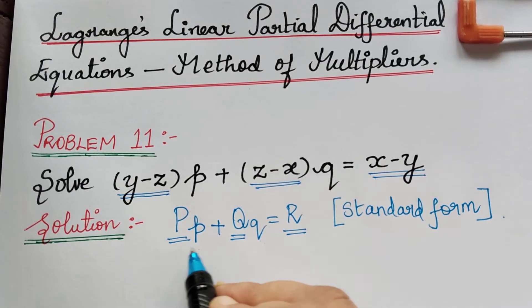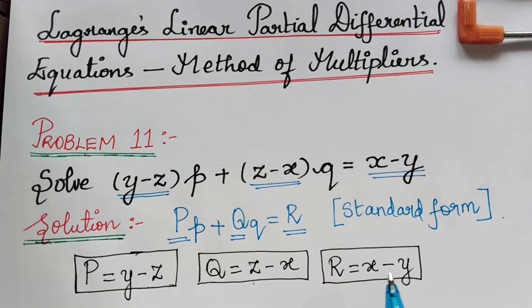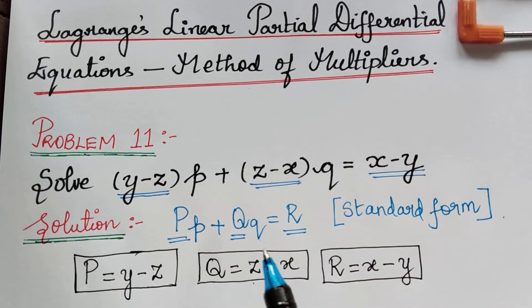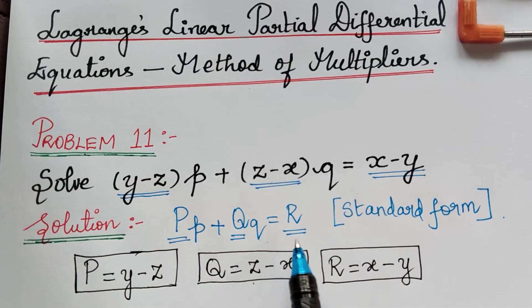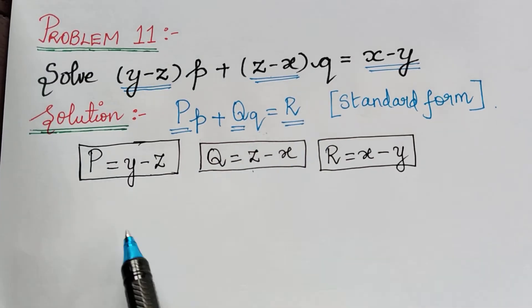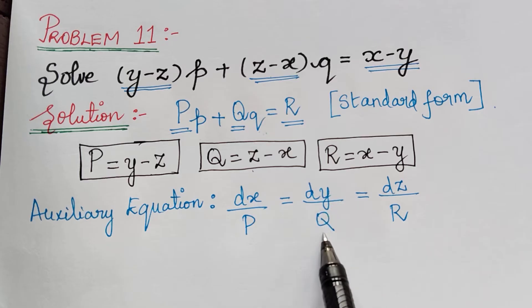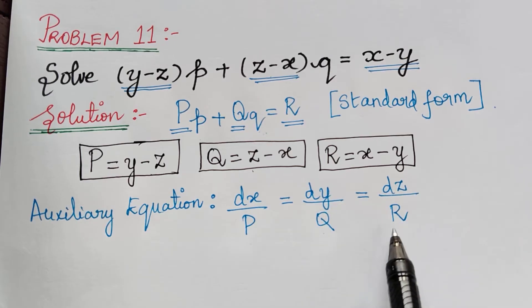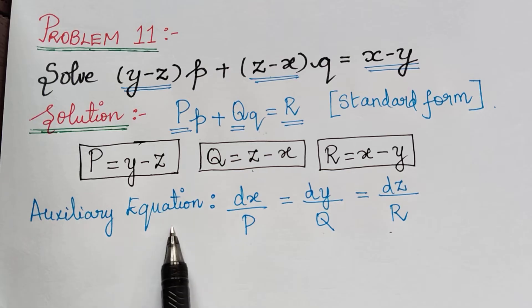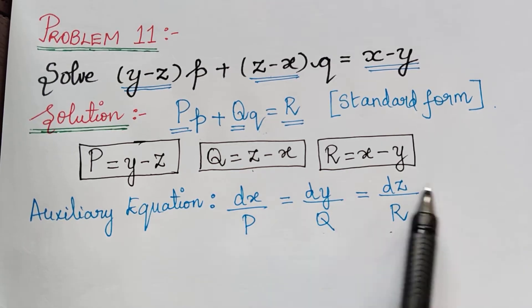So let us take that and write now. We have written capital P, capital Q, and capital R. The next step is to write the auxiliary equation of Lagrange's equation. The auxiliary equation of the Lagrange's partial differential equation is given by dx by capital P equals dy by capital Q equals dz by capital R. Now let us substitute the values of P, Q, and R in this equation.